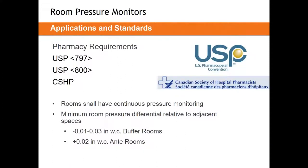Most of the information on compounding pharmacies comes from USP 795, USP 797, and USP 800. There is some information in ASHRAE 170, but it typically refers back to the USP standards for pressures and air change rates. Both USP 797 and USP 800 require continuous pressure monitoring — just like the isolation room, we must have room pressure monitors in compounding pharmacies. They are an absolute must.